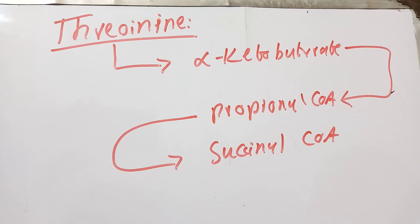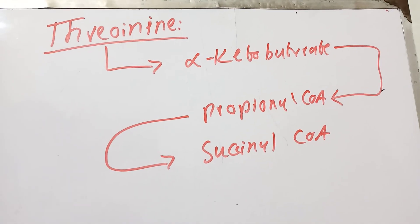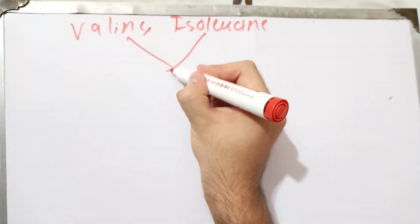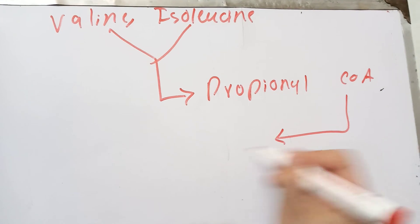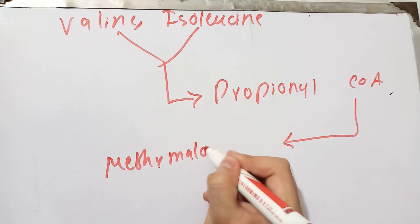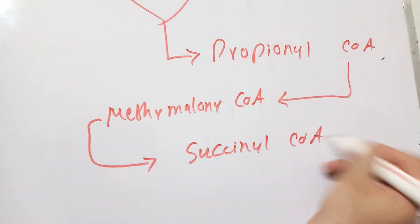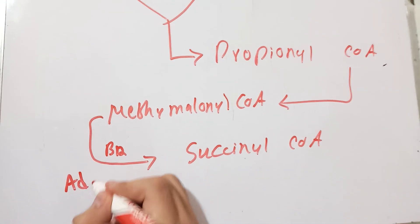The next two amino acids that lead to the formation of succinyl coenzyme A are valine and isoleucine — both are branched-chain amino acids. Valine and isoleucine both form propionyl coenzyme A, which is then converted into methylmalonyl coenzyme A. This methylmalonyl-CoA is then converted into succinyl coenzyme A, a reaction that requires vitamin B12 — specifically the adenosyl cobalamin form.